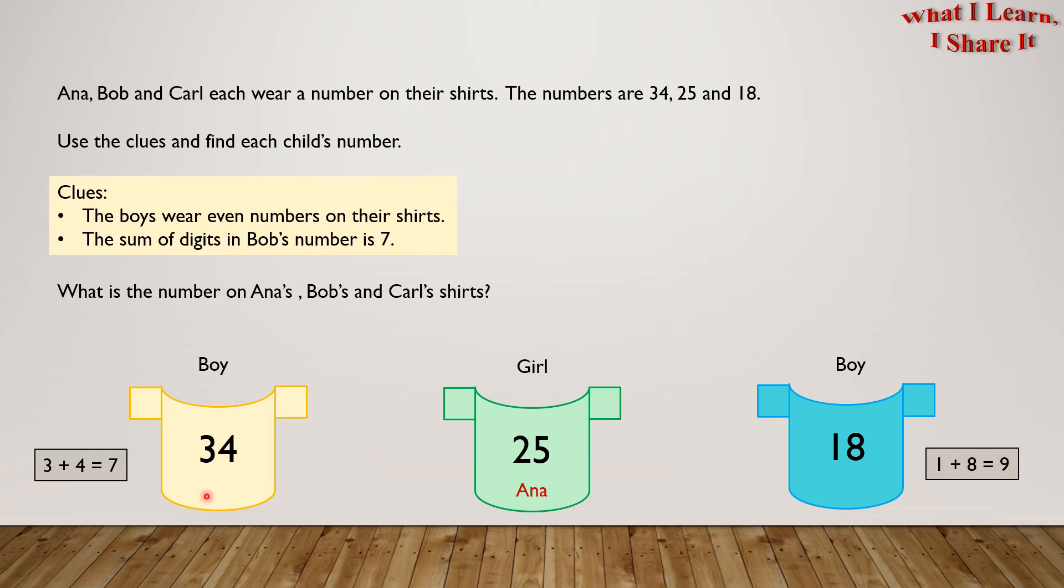So we could say that Bob is wearing shirt number 34. And since Carl is the only one left, we can make him wear shirt number 18.